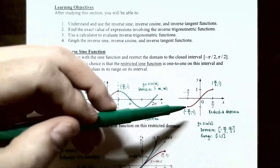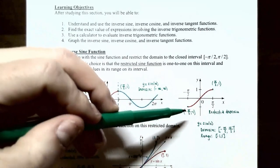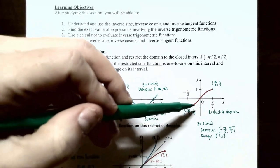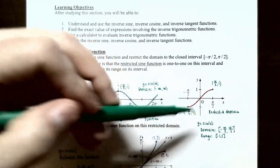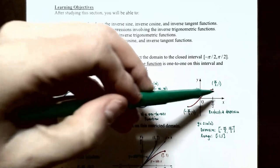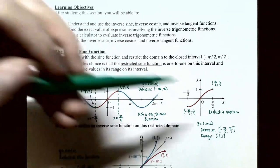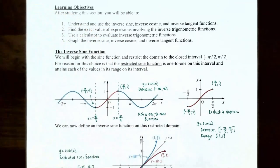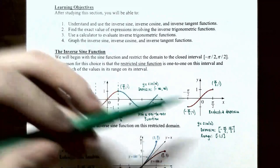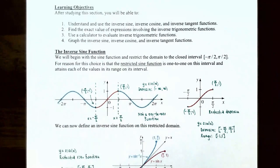The graph goes from the point (−π/2, −1), increases through the origin (0, 0), and then stops at the point (π/2, 1). This is the entire function y = sin(x) on this restricted domain. It does pass the horizontal line test, so the sine function on this restricted domain will actually have an inverse function.